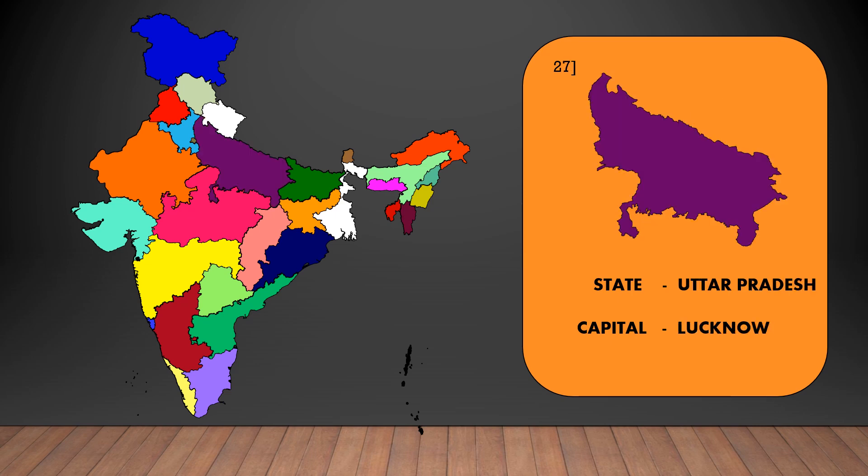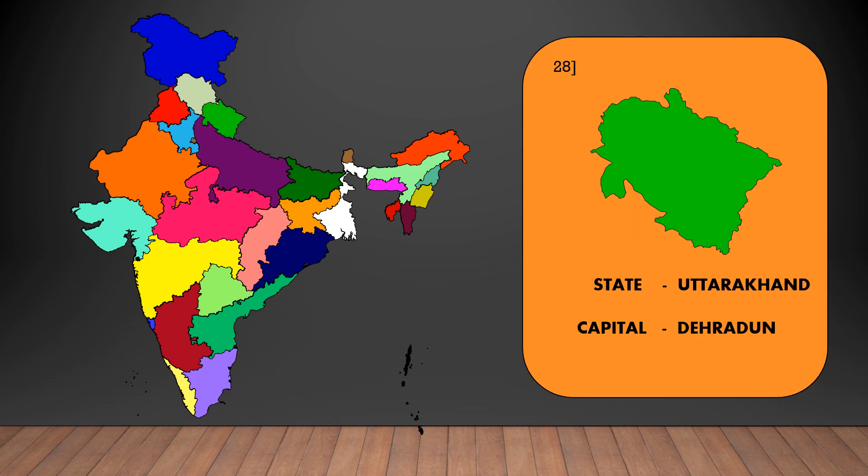The capital of Uttar Pradesh is Lucknow. The capital of Uttarakhand is Dehradun.